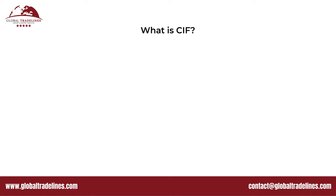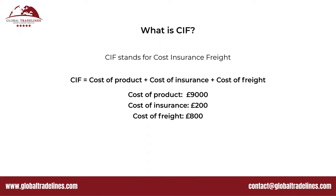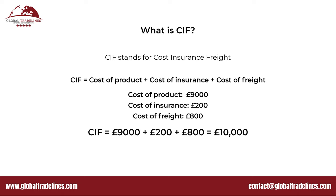Before you can calculate any taxes you need to know the CIF value of your products. CIF stands for Cost Insurance Freight — it is the cost of product plus the cost of insurance plus the cost of freight. For example, if the cost of product as per the invoice is £9,000, the insurance is £200, and the cost of freight is £800, then the CIF value will be the summation of all that, which is £10,000.